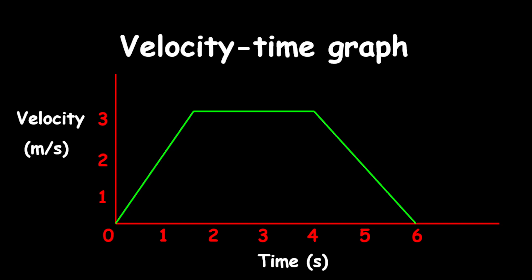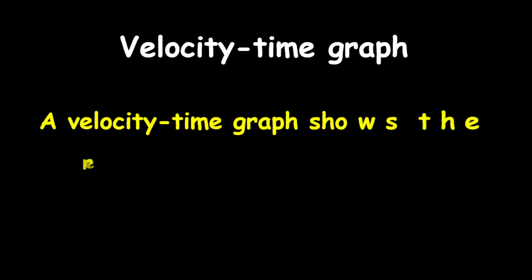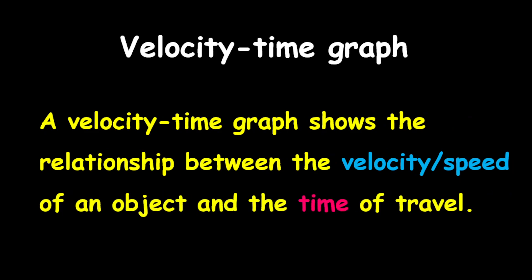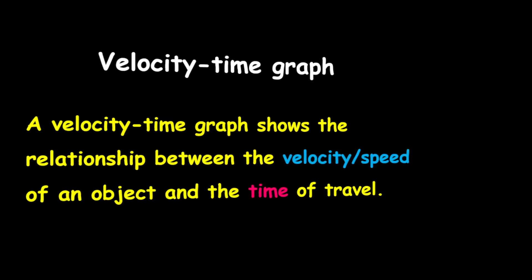Today we're looking at velocity-time graphs and we want to understand different types or different representations of velocity-time graphs. A velocity-time graph shows the relationship between the velocity or speed of an object and the time of travel. We're going to focus on different types of motions that can be represented using velocity-time graphs.